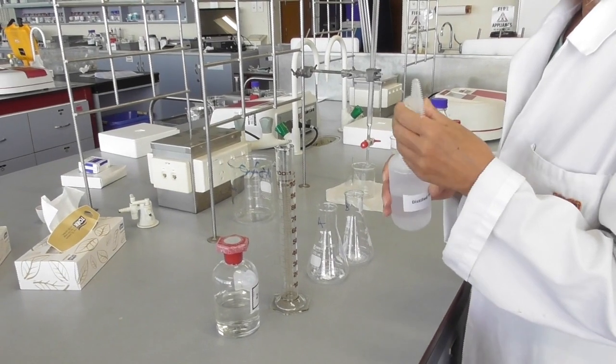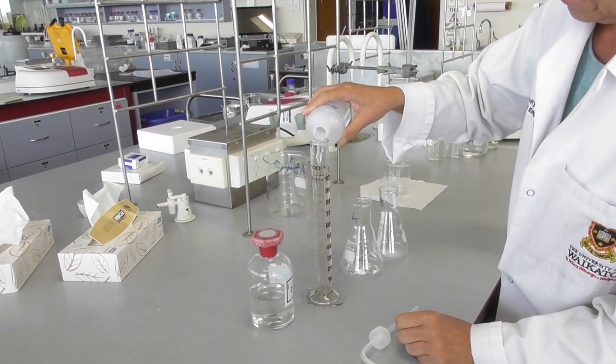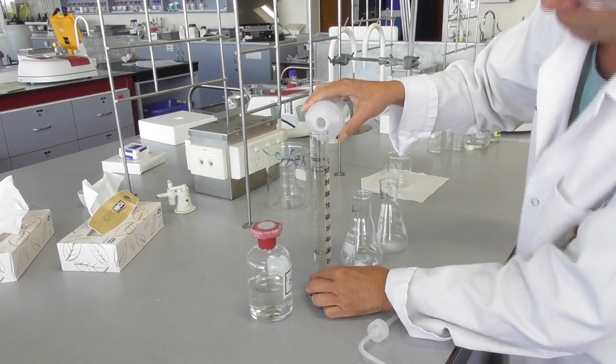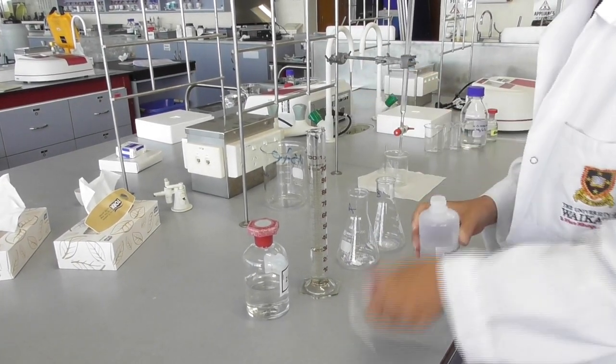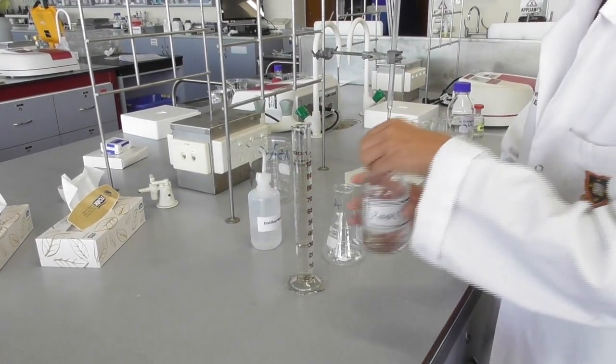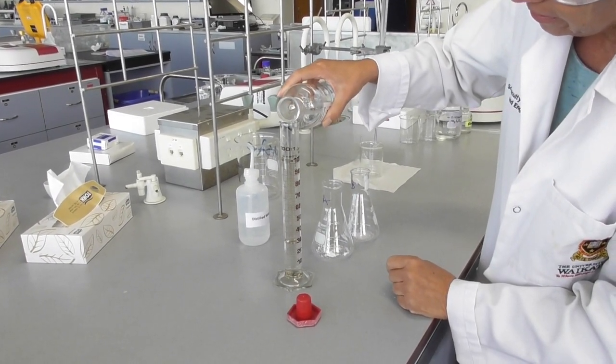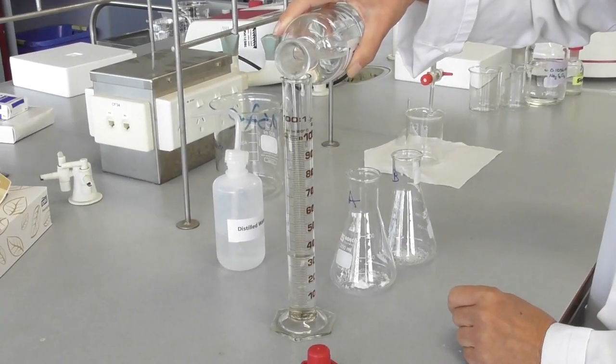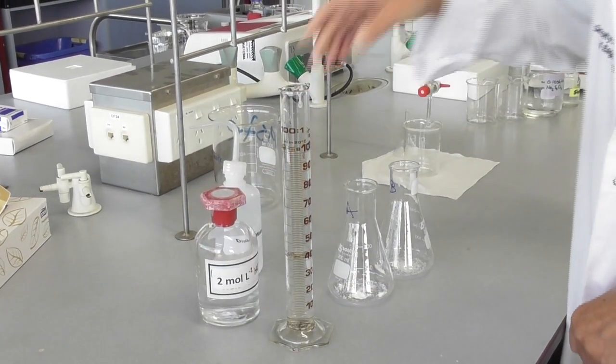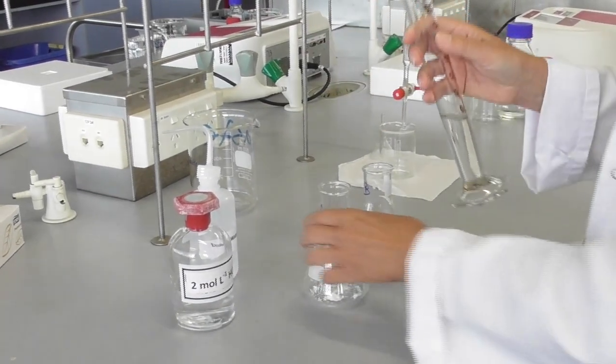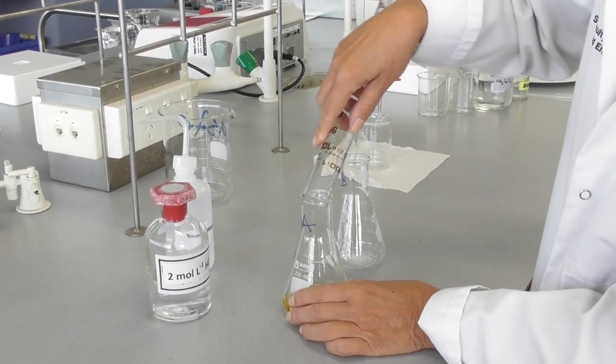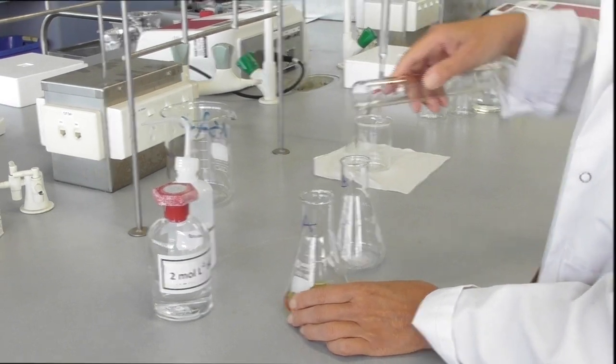Once I have added potassium iodide to both flasks, I prepare the acidic solution. I add 30 ml of distilled water into a graduated cylinder, and I add 10 ml of 2 molar hydrochloric acid to the water into the cylinder, so that I have 40 ml of somewhat diluted hydrochloric acid. I add this to the first flask and repeat the same for the second flask.